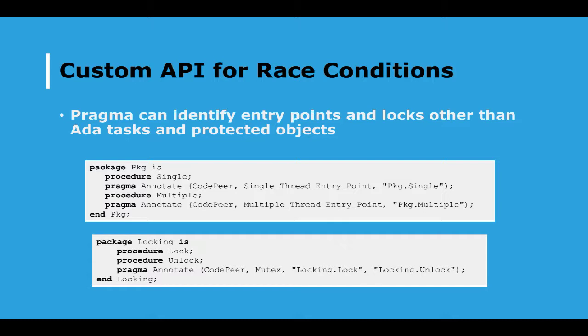Not every Ada program uses the standard Ada tasking model, because perhaps they're running on an operating system that has a limited set of capabilities. Nevertheless, they may have the ability to do some kind of mutual exclusion or a lock of some sort, and they may have something analogous to a task — some kind of thread provided by the underlying kernel. You can identify such constructs through pragmas to CodePeer, and with these pragmas, CodePeer can then do the kind of race condition analysis that is built in for protected objects and tasks, recognizing the entry points that correspond to the equivalent of a task and the locks that correspond to effectively protected or synchronized objects.